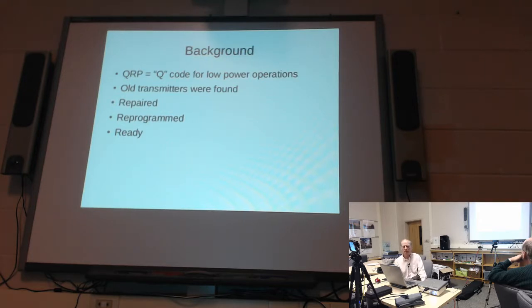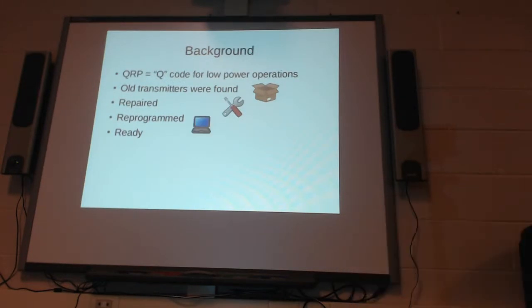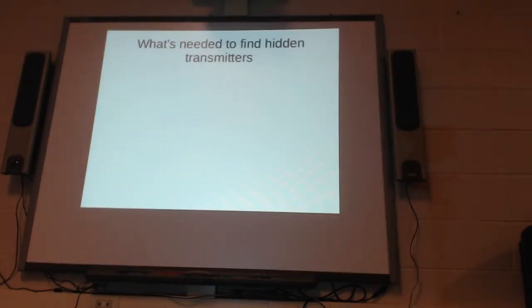We have some little transmitters that were used several years ago for a fox hunt activity, and they were found in our storage locker. These transmitters have been repaired, they've been reprogrammed, and they've been made ready for this operation. So what's needed to find the hidden transmitters? Basically, you're going to need a handy talkie set at 147.455 megahertz, narrowband FM receive only.